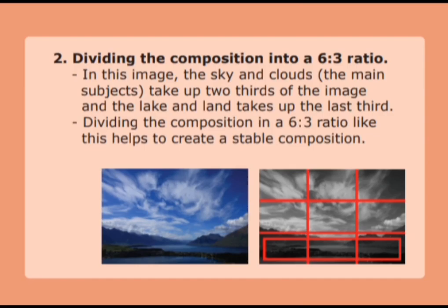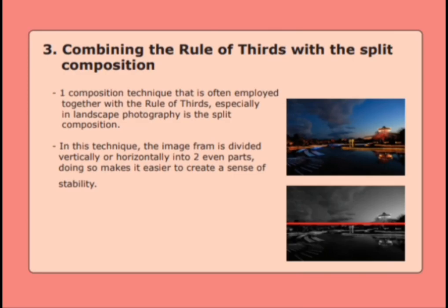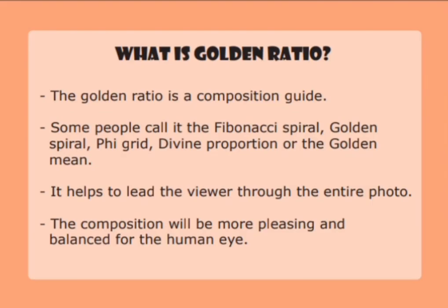The second example is dividing the composition into a two-thirds ratio. In this image, the sky and clouds — the main subject — take up two-thirds of the image, and the lake and land take up the last third. Dividing the composition in this ratio helps to create a stable composition. The last example is combining the rule of thirds with the split composition. One technique often employed together with the rule of thirds, especially in landscape photography, is the split composition. In this technique, the image frame is divided vertically or horizontally into two even parts, making it easier to create a sense of stability.